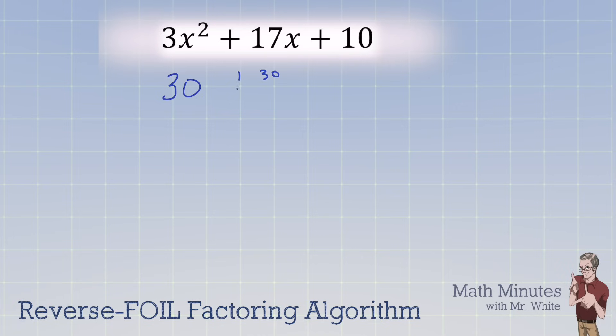So 1 times 30, 2 times 15, 3 times 10, 5 times 6 are the different ways that you can make 30. Now look through that list and tell me which one adds up to 17x, because 17x is the middle term. Which one is it? It is the 2 and the 15.